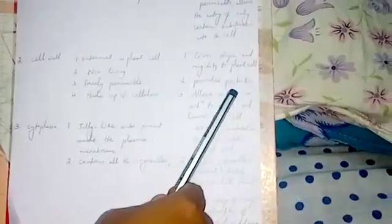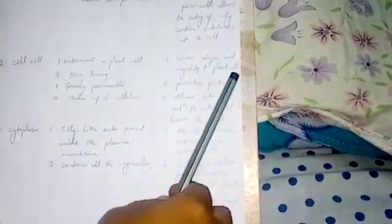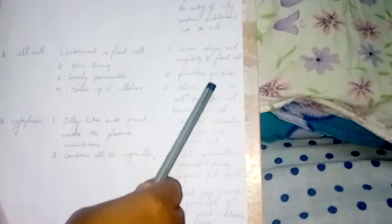Its composition is made up of cellulose. Coming to the functions, it gives shape and rigidity to the plant cell, makes the plant cell rigid, provides protection from the external environment, allows substances in solution form to enter and leave the cell.